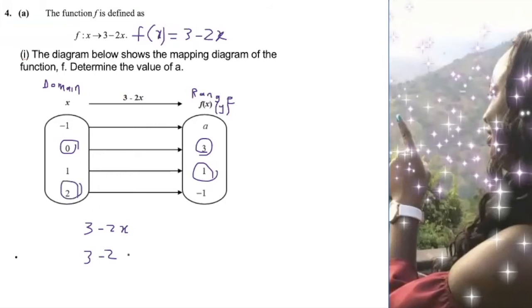When x equals 2, I substitute 2 into the function: 2 times 2 is 4, so 3 take away 4 gives me negative 1. That is my y value.